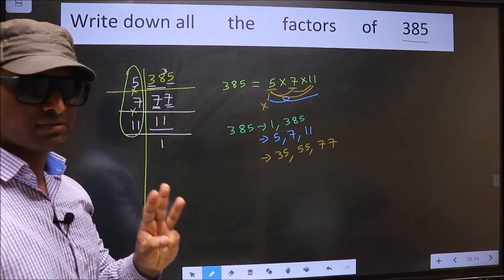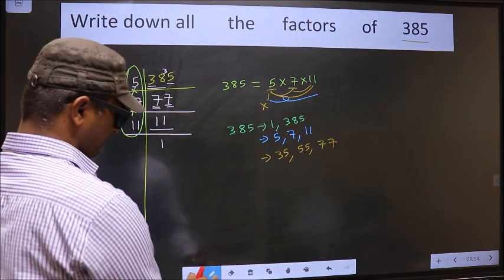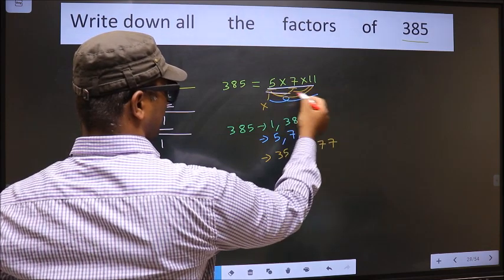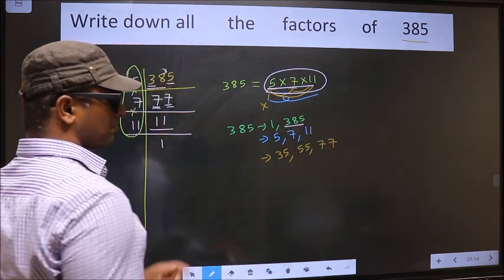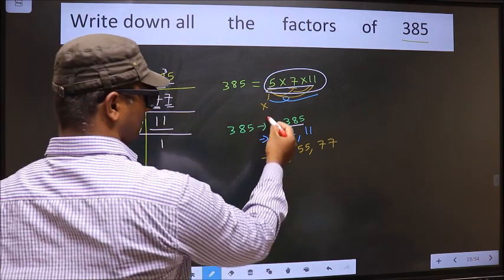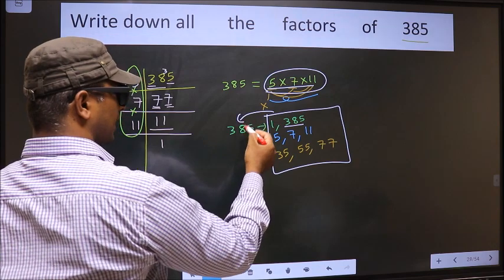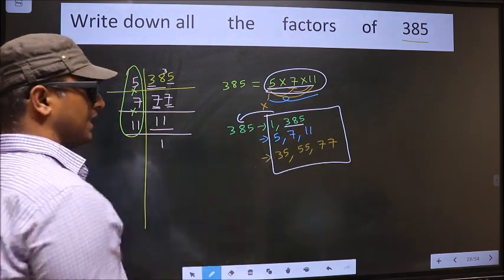Now you take the combination of three numbers. Over here we have three numbers. When we take all the three numbers, we get 385 itself. Therefore all these numbers are the factors of 385.